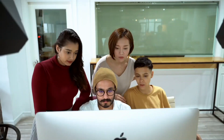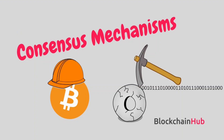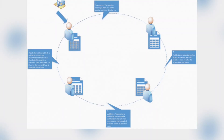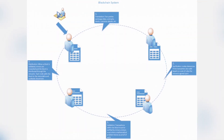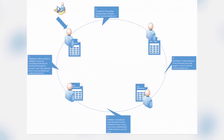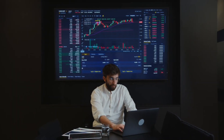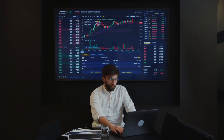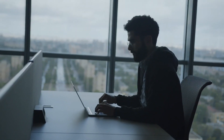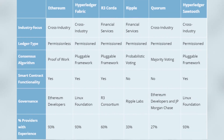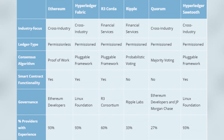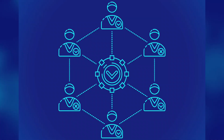Step 2: After defining your objectives clearly, you need to choose a consensus mechanism. The participating nodes should agree on which transactions should be considered legitimate. This will help your blockchain operate smoothly. Step 3: The next step is to pick a blockchain platform. This decision depends on the consensus mechanism you have selected.